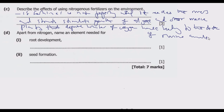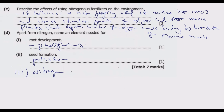Question D: Apart from nitrogen, name an element needed for root development. For root development the answer is phosphorus — phosphorus promotes root development. For seed formation the answer is potassium. For growth, as discussed earlier, the answer is nitrogen. Take note of these three elements found in fertilizers; they are what makes the fertilizer meet all three requirements for a plant to succeed.